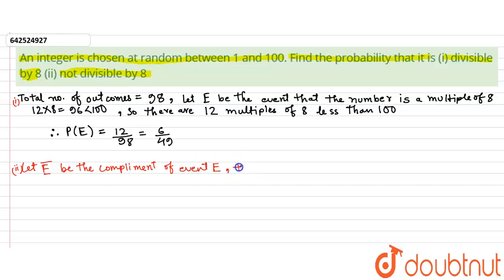Then E bar is the complement of event E. So the event is the event that the number is not a multiple of 8, which we needed to find.